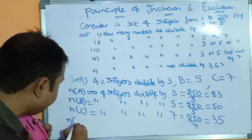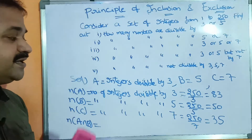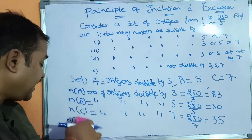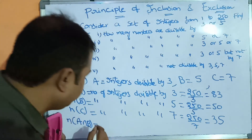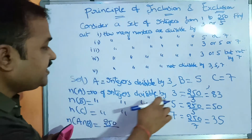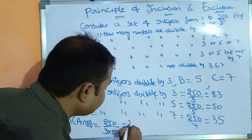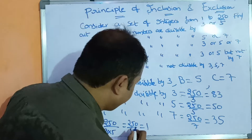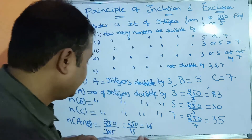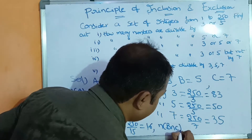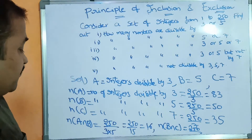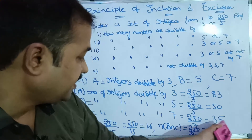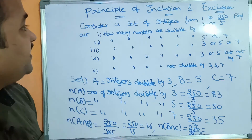Likewise, we can calculate n(A∩B). n(A∩B) is the number of integers divisible by both 3 and 5, which equals floor(250/(3×5)) = floor(250/15) = 16. Likewise, n(B∩C) = floor(250/(5×7)) = floor(250/35) = 7. We also need to find n(A∩C).